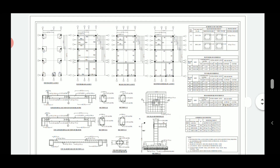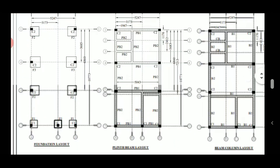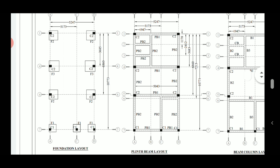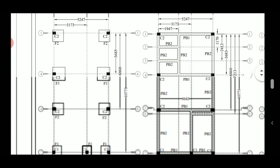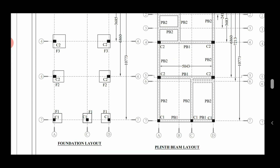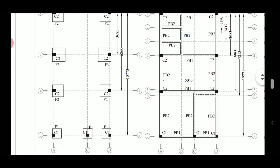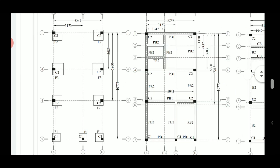Now let's discuss all the structural components one by one, starting with the foundation layout. As you can see here, this is the foundation layout of the plan — there are nine columns and nine foundations. We have given isolated footing here, and the center-to-center distance between all columns is mentioned. The foundation marks given are F1, F2, and F3, and the details of these three types can be found in the foundation schedule.